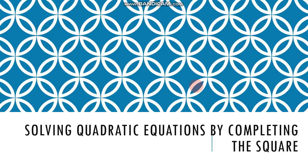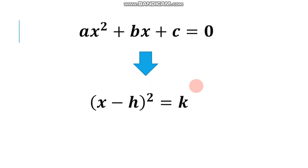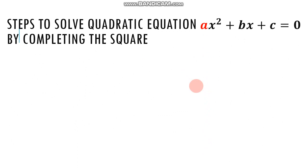This method involves the transformation of the quadratic equation ax squared plus bx plus c equals zero into this form: quantity x minus h squared is equal to k, where k is greater than or equal to zero. There are steps to solve a quadratic equation by completing the square.